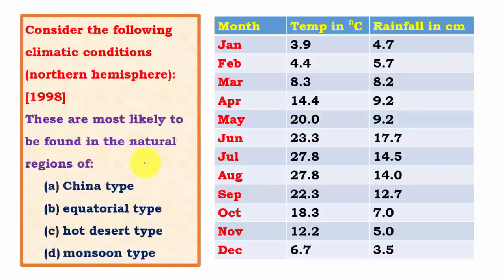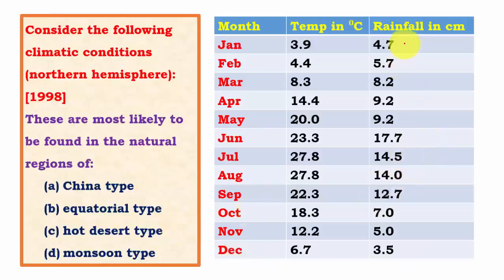The next graph question has four options: China type, Equatorial type, Hot Desert type, and Monsoon type. Starting with the easiest: Hot Desert type has average annual rainfall below 25 cm. A single month in the graph shows about 15 cm average monthly rainfall, and rainfall is well distributed throughout the year, so Hot Desert option can be totally ruled out.